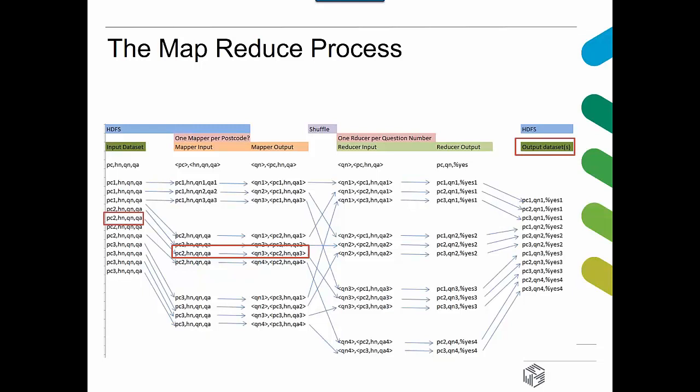The shuffle step sends records with the same key value to the same reducer. So all question threes from your dataset go to one reducer node. The reducer's job is to do an aggregation — for each postcode, it sums the records and works out the percentage of yes answers for question three. That record is then sent to the output dataset. At the end, the output dataset contains the percentage of yes records by postcode area.